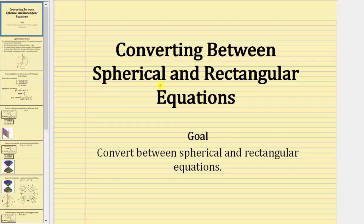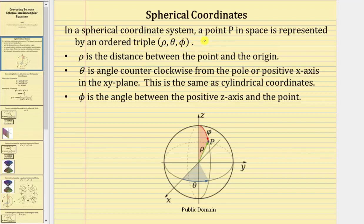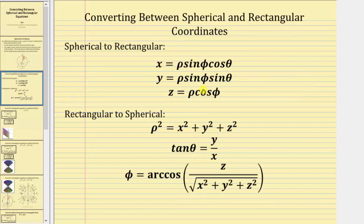Welcome to a lesson on converting between spherical and rectangular equations. For review, in a spherical coordinate system, a point P in space is represented by the ordered triple rho, theta, phi, where rho is the distance between the point and the origin — this green distance here. Theta is the angle counterclockwise from the positive x-axis in the xy-plane, this blue angle, and phi is the angle between the positive z-axis and the point, the red angle. When converting between the two coordinate systems, we use the equations shown here.